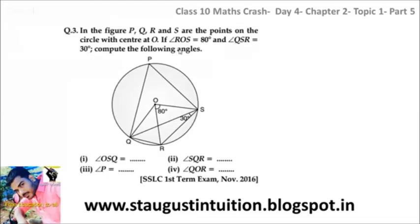In the figure, P, Q, R, S are points on a circle with center O. Angle ROS is equal to 80 degrees and angle QSR is equal to 30 degrees. Compute the following angles: angle OSQ, angle R, angle P, and angle QOR.